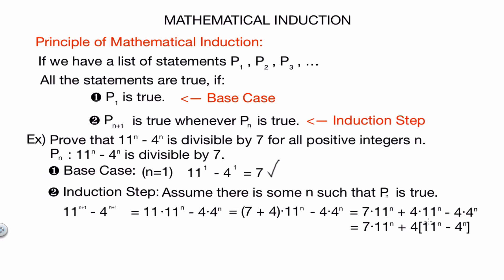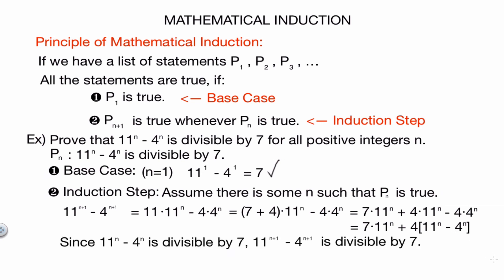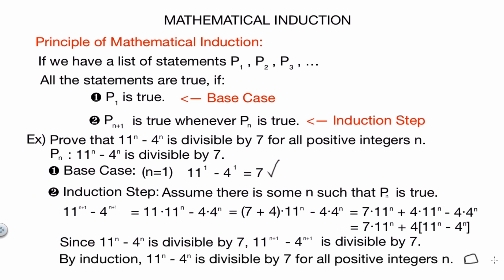We now have a common factor of 4, giving 7·11ⁿ + 4·(11ⁿ − 4ⁿ). From our assumption, 11ⁿ − 4ⁿ is divisible by 7, and 7·11ⁿ is clearly divisible by 7. So the whole expression 11^(n+1) − 4^(n+1) is divisible by 7. Therefore, since 11ⁿ − 4ⁿ divisible by 7 implies 11^(n+1) − 4^(n+1) divisible by 7, by mathematical induction 11ⁿ − 4ⁿ is divisible by 7 for all positive integers n. That concludes our proof.